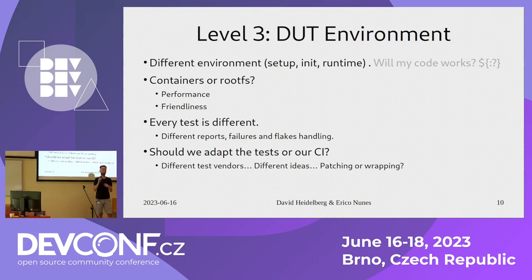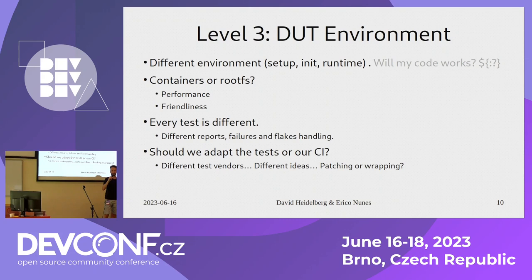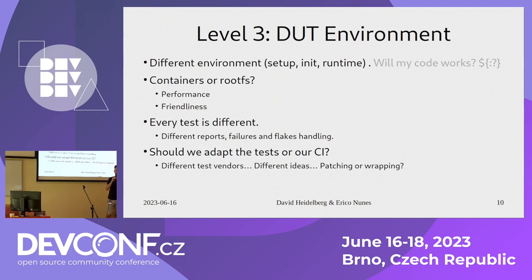Containers versus rootfs — we have two approaches. One is the container: you just load the container on the device. Valve uses it, and the non-hardware jobs use it too. It's great because the developer can just download the image and run it locally on their computer without setting up anything. On the other hand, it's a little bit slower. For LAVA farms and some barebone devices, we're using rootfs, whose advantage is performance — you just unpack a rootfs on an NFS server or send it to the device and that's it. No overhead. Probably over time we'll move to containers because for developers it's more useful.